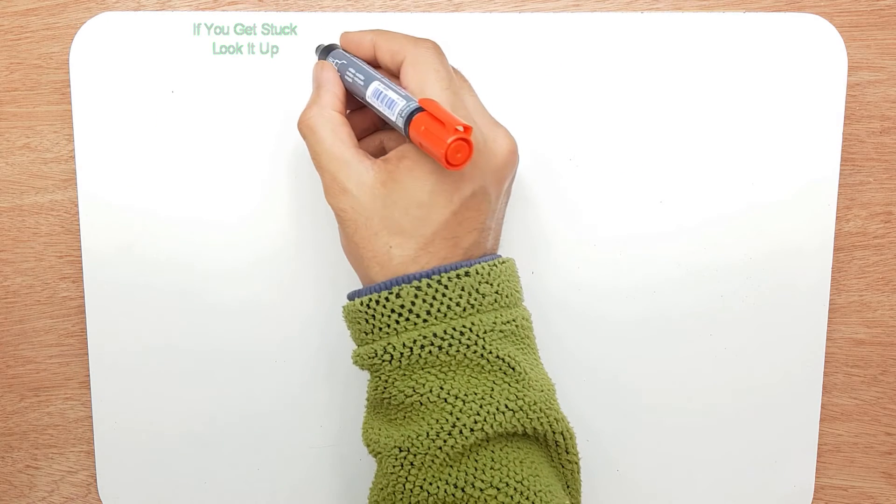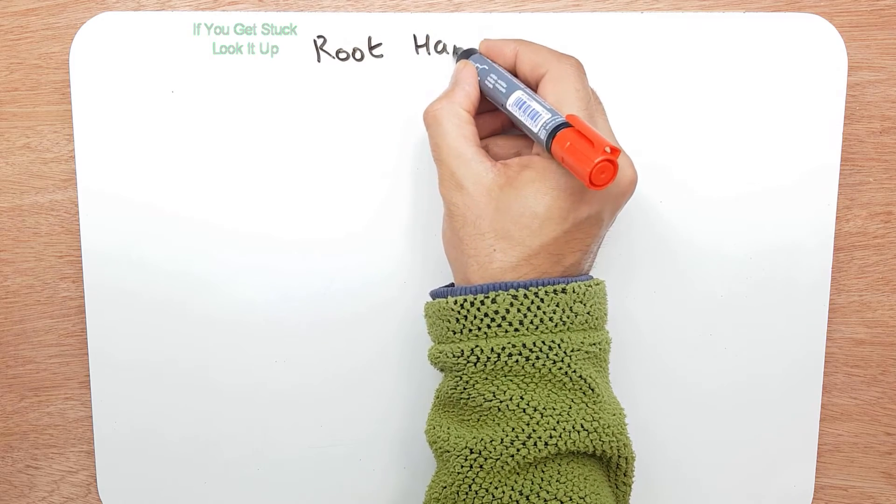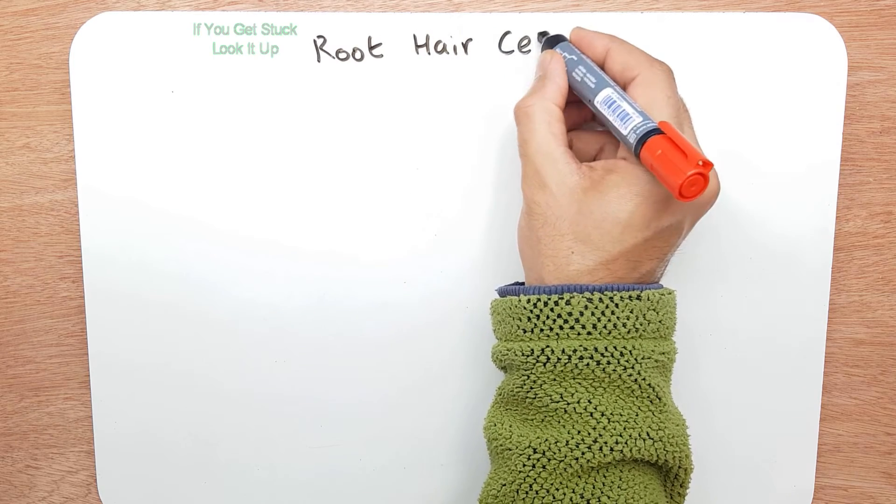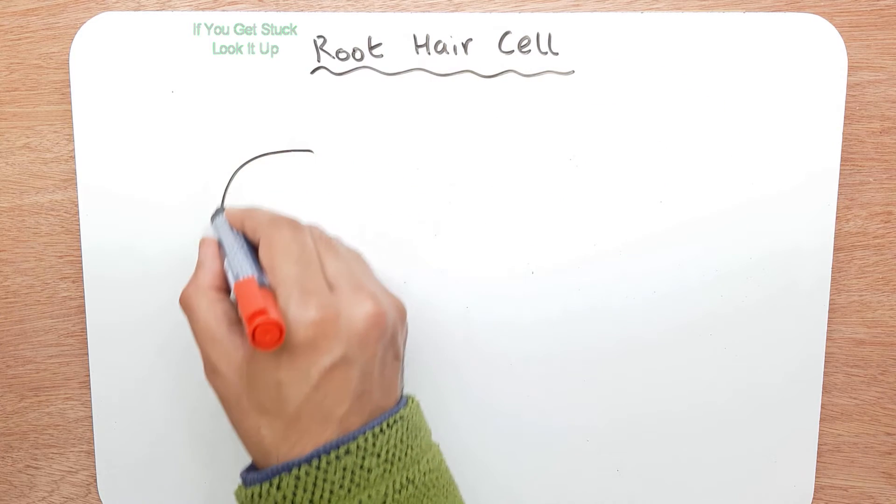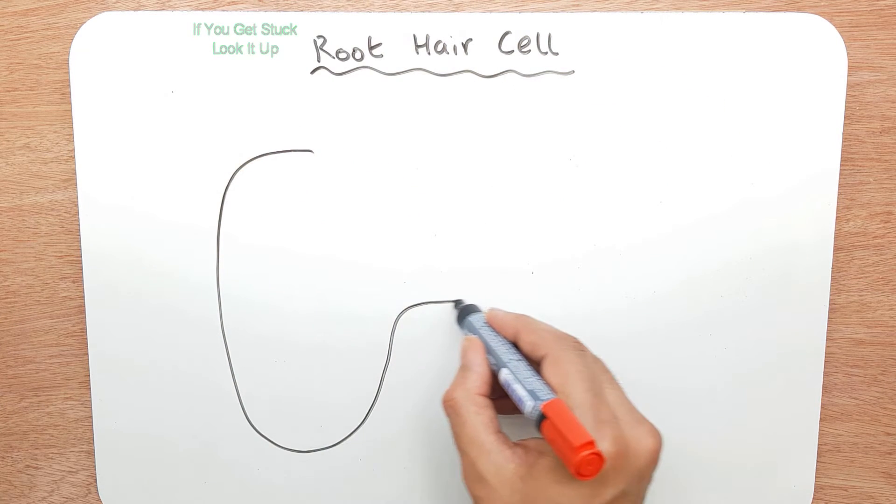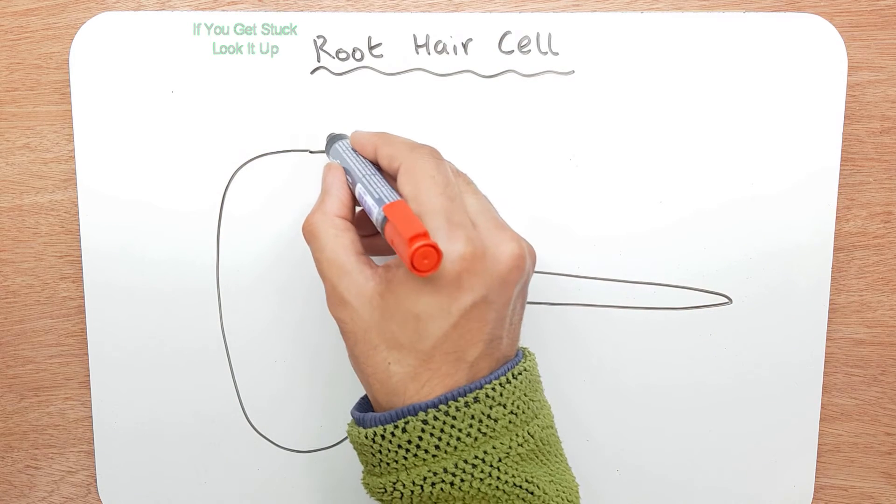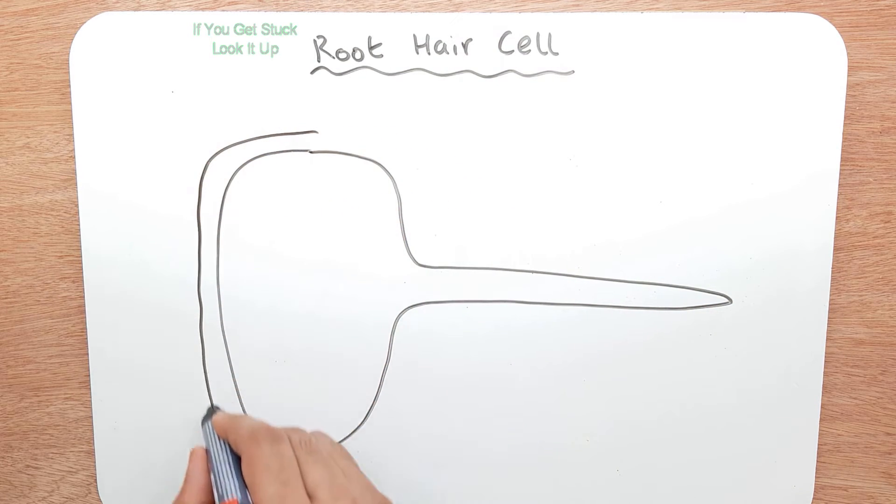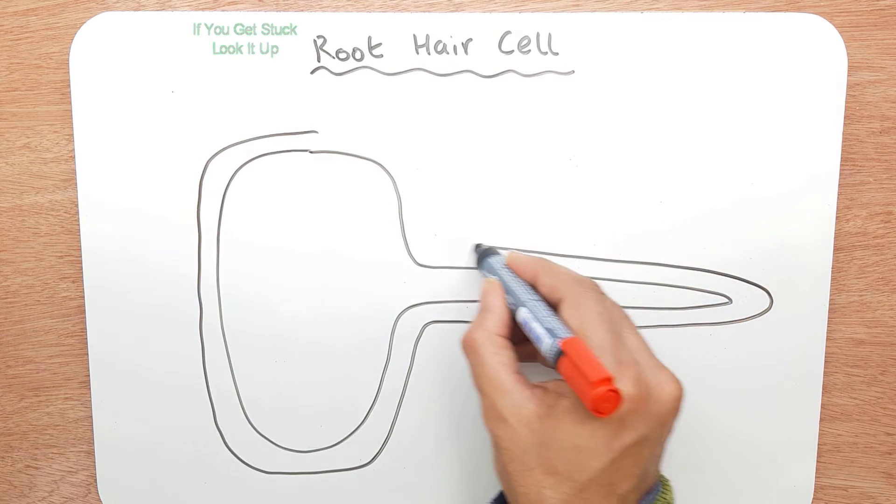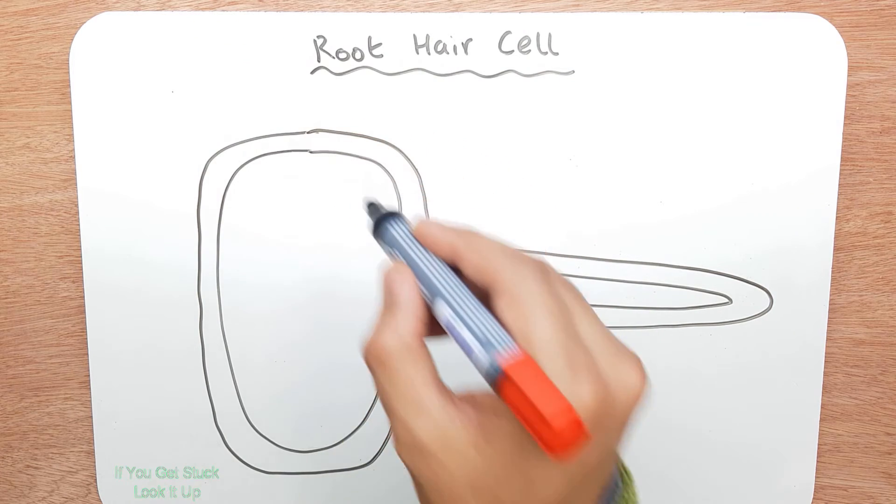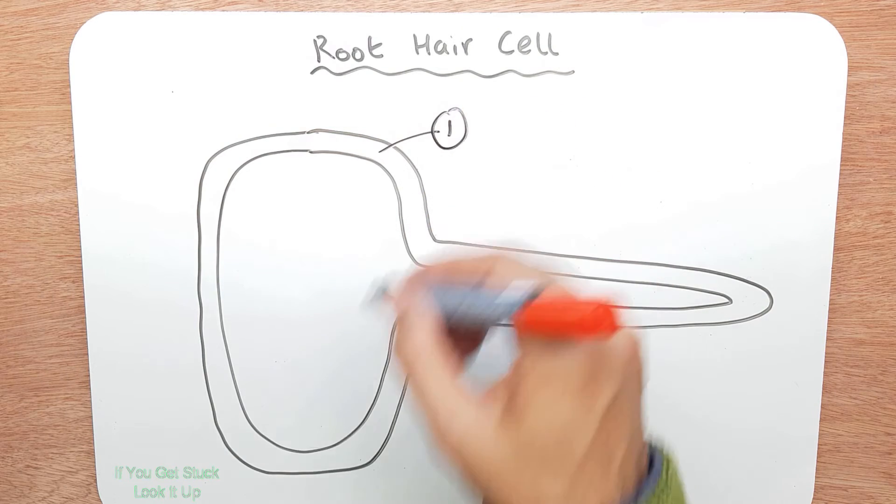So in summary, we're looking at the root hair cell. Let's draw the main structure holding it all together, a big thick structure. And this is what you want to do: just keep drawing it and keep naming it, and the structure will go into your head. That's our first structure.